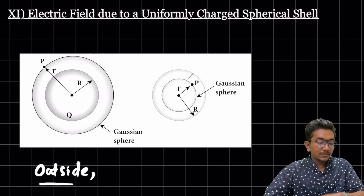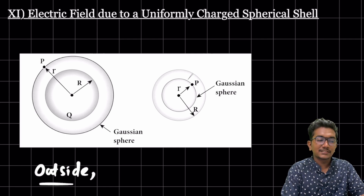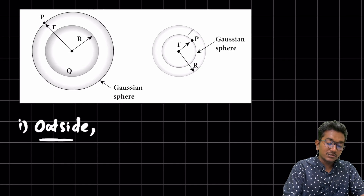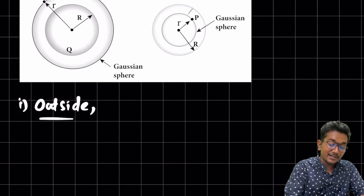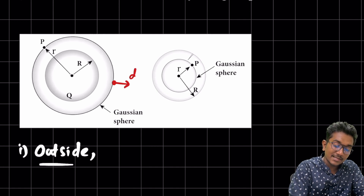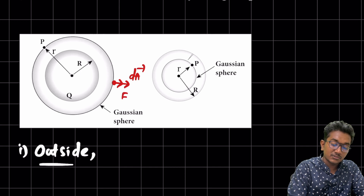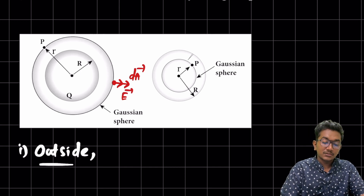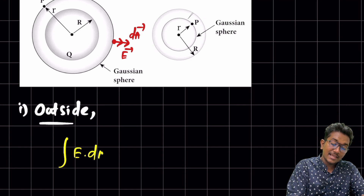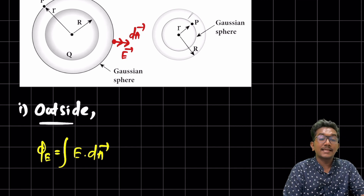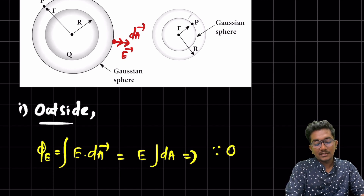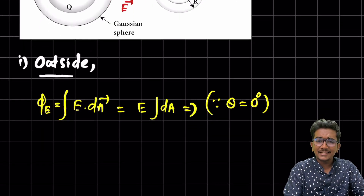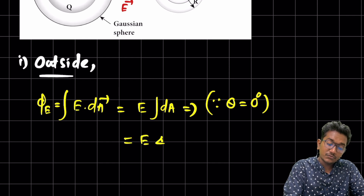For the outside case, I consider a small area element dA. The direction of dA is radially outward, and the electric field is also in the same direction, so the angle between them is zero degrees. Therefore, the flux integral becomes E dot dA = E times the integral of dA.